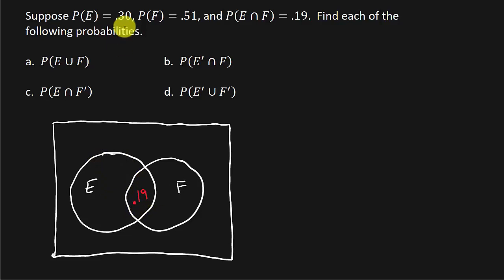So what this means, this 0.3, is that this entire circle has to equal 0.3. So what would go here? Well, that would be 0.3 minus 0.19, which is 0.11. So that's 0.11.